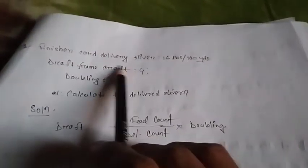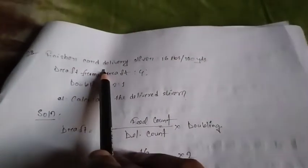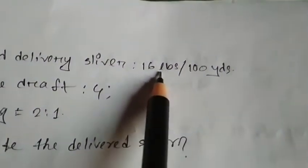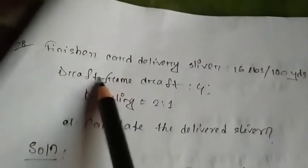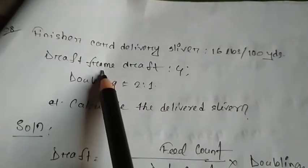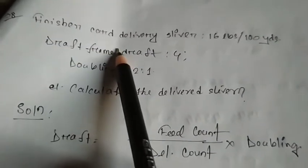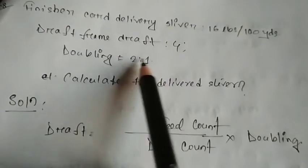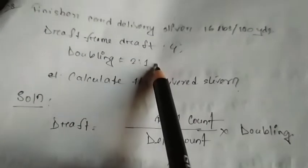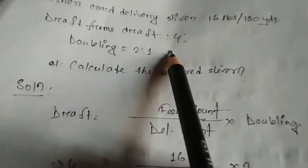We will finish our cut sliver to deliver weight count 16 pounds per 100 yards. So the spinning frame is 4 and doubling is 2 to 1, that means 2 is to have the output.